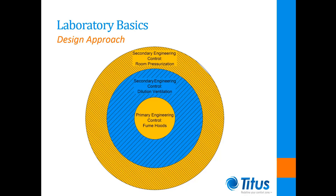This is achieved through the use of dilution ventilation, purging any contaminants that may have escaped containment within the hood, and by maintaining a negative pressure relationship to the adjoining spaces. In order to maintain a negative pressure relationship within the laboratory space, we need to supply less airflow to the lab than exhausted from the room. The volume of exhaust is based on the combined exhaust flow rates for the fume hoods utilized and the minimum required air changes per hour. The volume of this offset will depend on how tightly the room is constructed and the desired differential pressure, and is most commonly identified as a set airflow rate typically between 150 and 250 CFM.